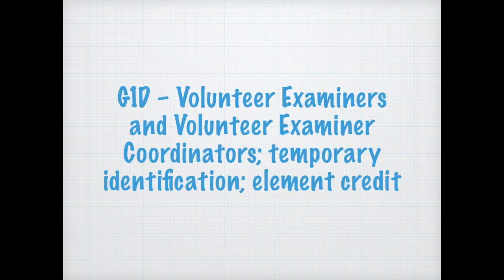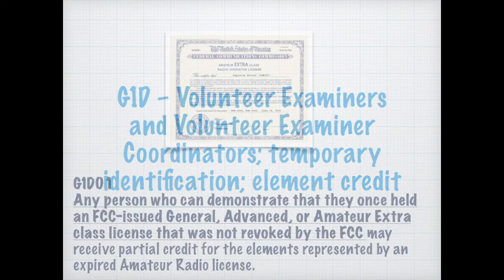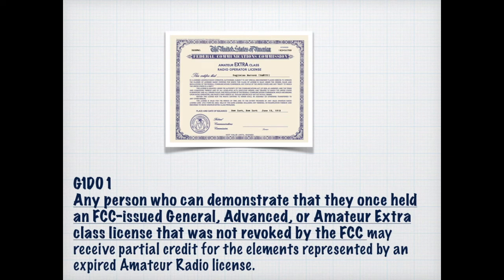In this section, we're going to talk about volunteer examiners, volunteer examiner coordinators, and temporary identifications and credits for the tests that you take. As a general licensee, if you can demonstrate that you once held a general, advanced, or amateur extra license that wasn't revoked, you can receive partial credit for elements represented on an expired radio license. That said, just don't let your license ever expire.